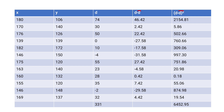Next, copy all pre-test values in the x column and all post-test values in the y column, in order. Then you have to find out the difference d, which is x minus y — the difference between pre-test and post-test values.